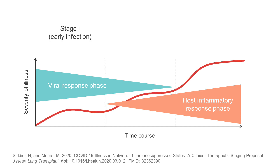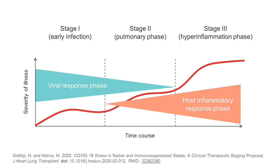The first is the early infection or viral response phase, where symptoms of upper respiratory tract infection dominate. The second is the pulmonary phase, when patients develop full-blown pneumonia with all its associated symptoms. And the third is the hyper-inflammation phase, when patients develop ARDS, sepsis, and kidney and other organ failure.